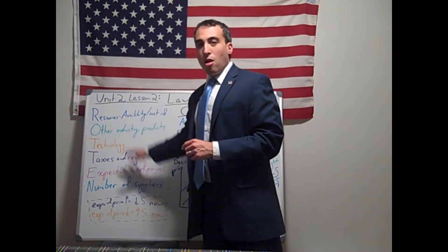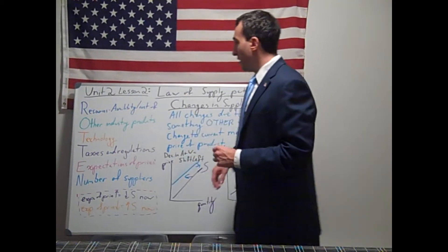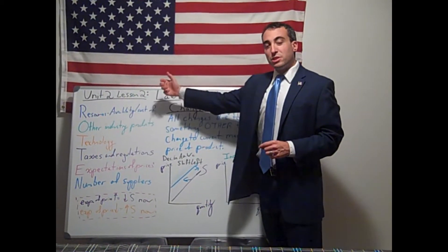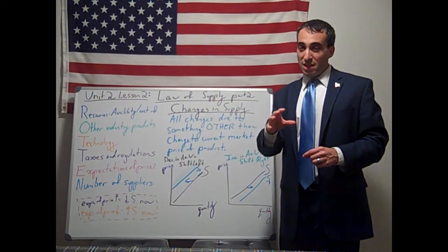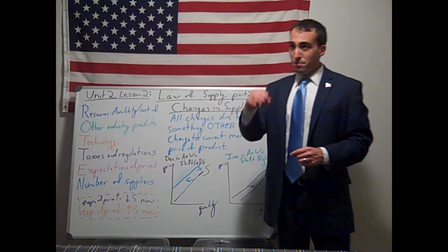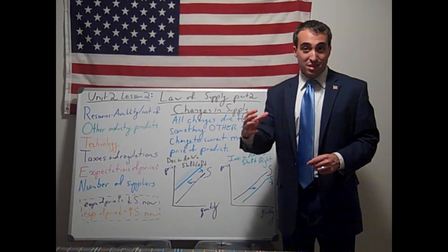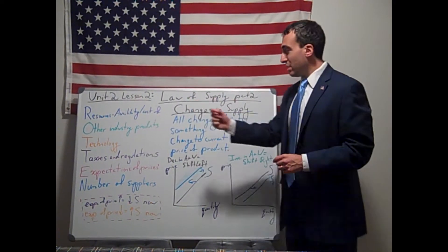Our acronym ROTTEN are only things that affect supply. First, resources, the availability of resources and the cost of those resources. And that could include land, it could include rent, it could include wages. So the cost of the resources and the availability of the resources.